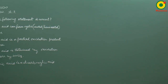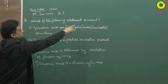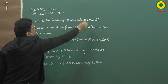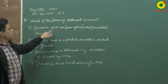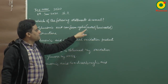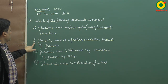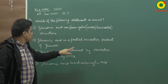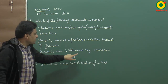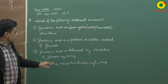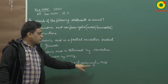NEET 2020, 7th January, 2nd shift question: Which of the following statements is correct? 1. Gluconic acid can form cyclic acetal or hemiacetal structure. 2. Gluconic acid is a partial oxidation product of glucose. 3. Gluconic acid is obtained by oxidation of glucose by HNO3. 4. Gluconic acid is a dicarboxylic acid.